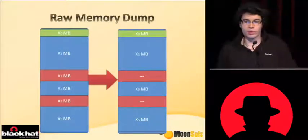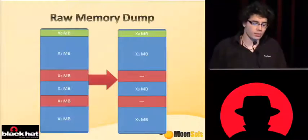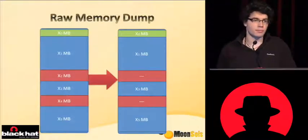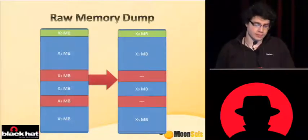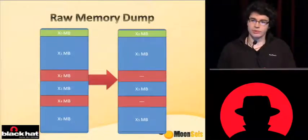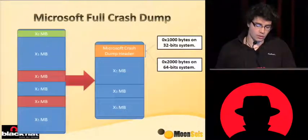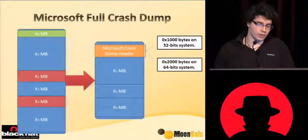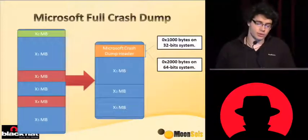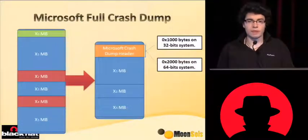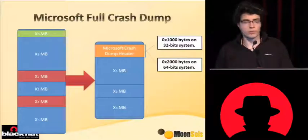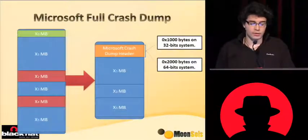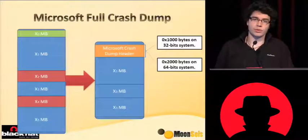When you are doing a copy of the raw memory dump, it is exactly a copy of the physical address space — nothing really complex. When Windows is generating the Microsoft crash dump, Windows takes only the blue blocks, puts them in the Microsoft crash dump file, and adds the Microsoft crash dump header which contains information that the Windows debugger uses to initialize the debugger.